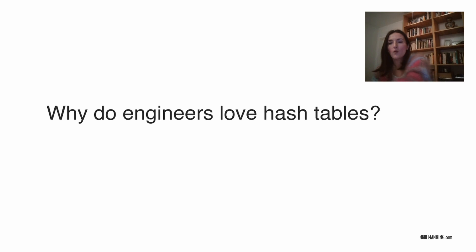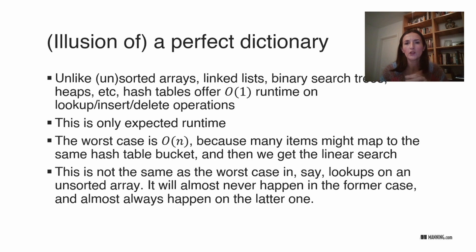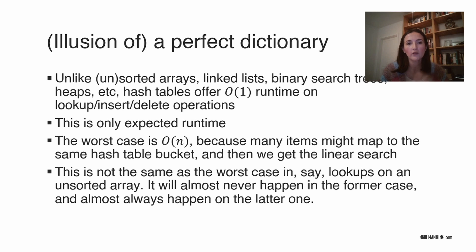So why do we love hash tables so much? In short, it seems like a kind of perfect dictionary. When you look at other data structures like arrays, linked lists, and binary search trees, hash tables are the only one that run in constant time for lookup, insert, and delete — that's where the 'perfect' comes from. However, where does the 'illusion' come from? It's only expected constant time — it doesn't offer the guarantee that a binary search tree offers that operations will not run longer than logarithmic time.